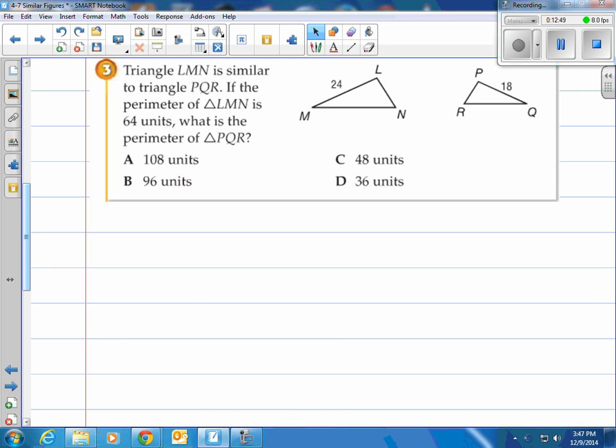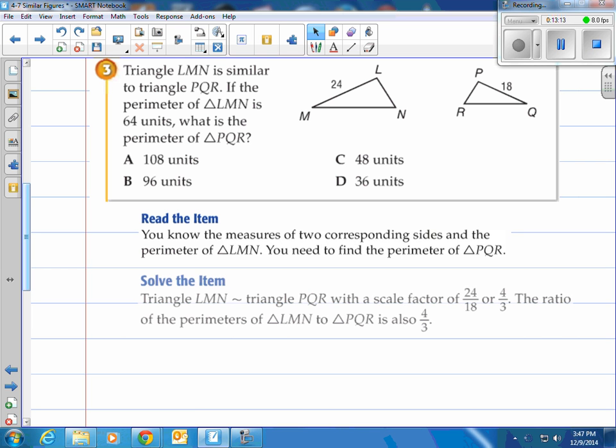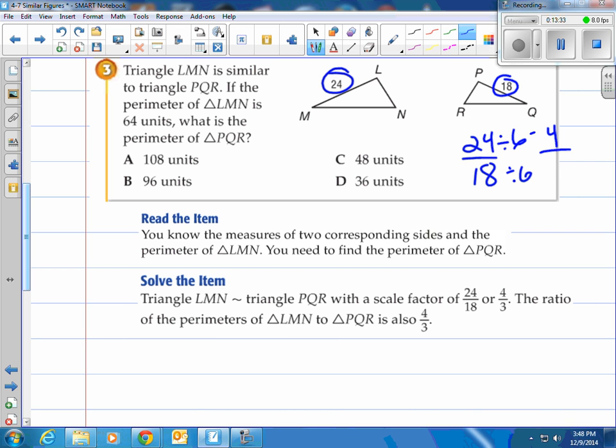If the perimeter of LMN is 64 units, what is the perimeter of triangle PQR? You know the measures of two corresponding sides and the perimeter of triangle LMN. You need to find the perimeter of PQR. Triangle LMN is similar to triangle PQR with a scale factor of 24 to 18. This one came first. This one came second. So we write 24 over 18, and we reduce that down. We divide by six and you'll see that's why we have our 4 over 3. The ratio of the perimeter of triangle LMN to triangle PQR is also 4 over 3, which we proved in that previous example.